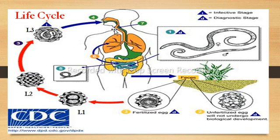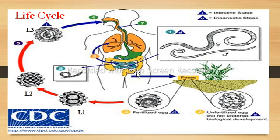The embryonated larvae go to the small intestine where hatching occurs — the larvae emerge from the embryonated eggs. The hatched larvae enter circulation and reach the lungs. In the lungs, the larvae burst the alveolar sacs, are coughed up and swallowed with sputum through the gastrointestinal tract. In the small intestine, maturation proceeds and the larvae convert into adult male and female worms. Then the cycle repeats.